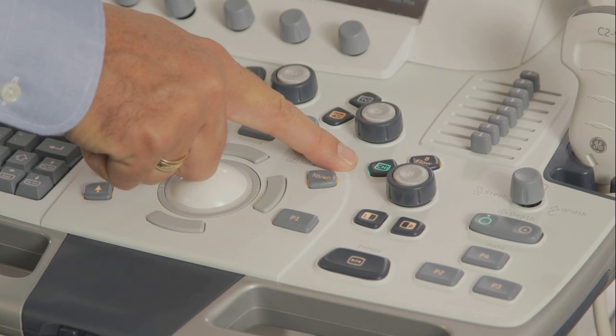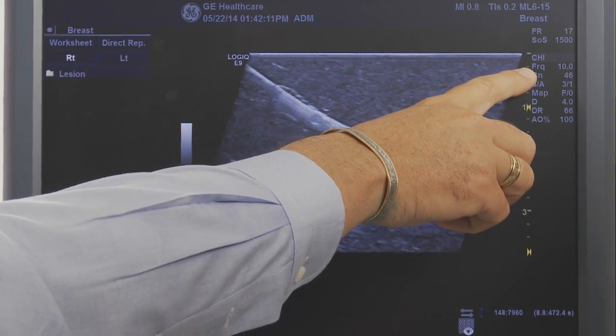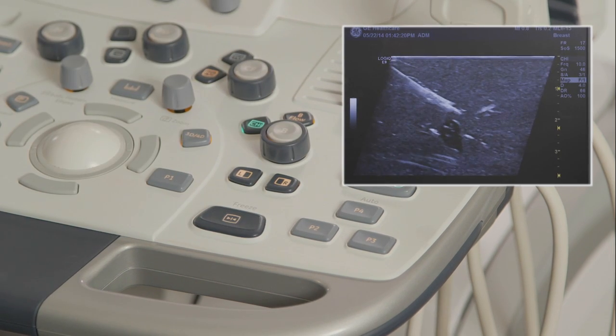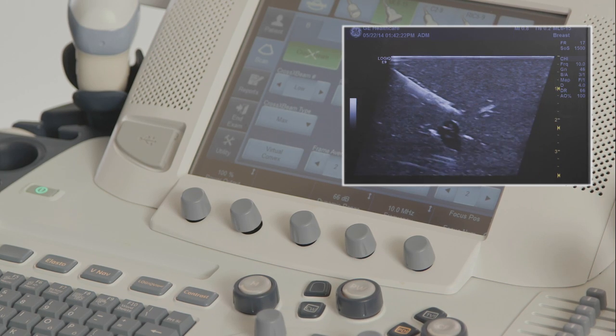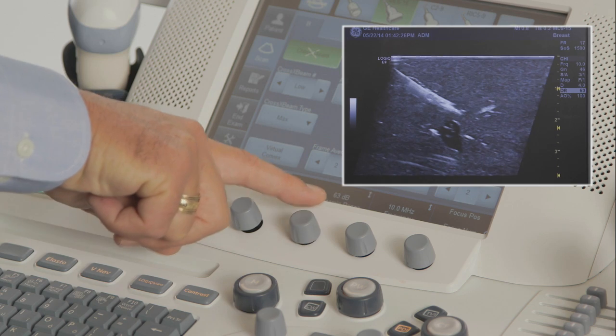Remember to use harmonics, as we want the best image quality during the needle procedure. Turning on ATO or auto-optimize can improve image contrast and needle perception. Also, lowering dynamic range can increase image contrast and allow better visualization of the needle.